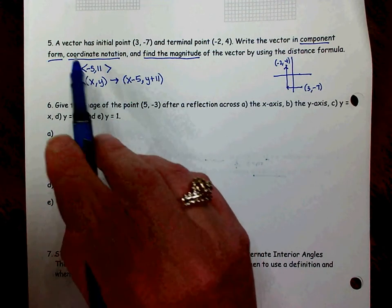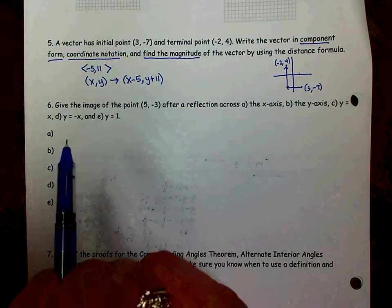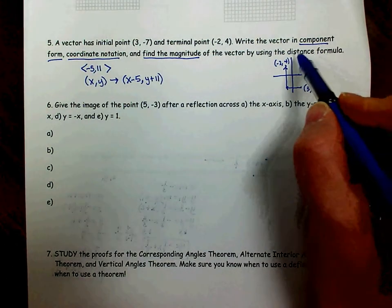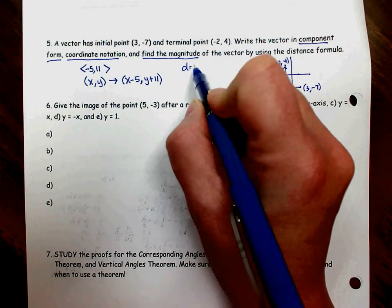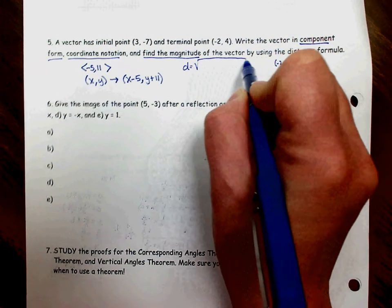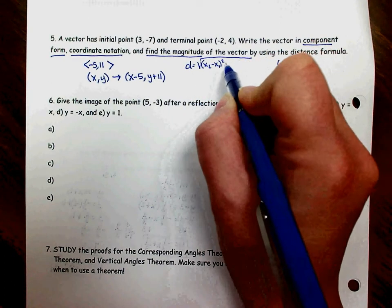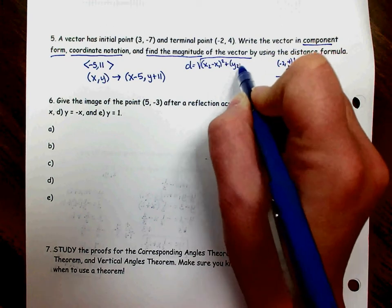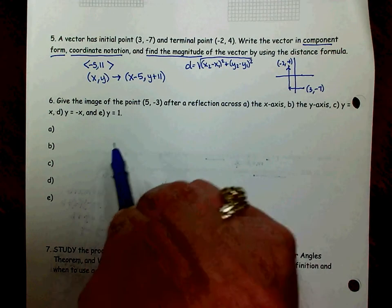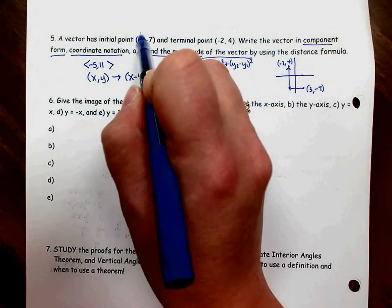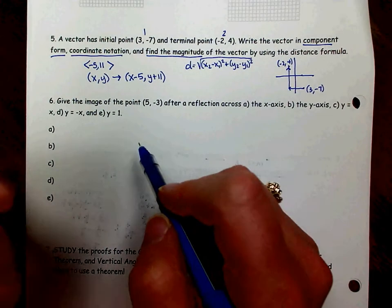We've done the component form, we've written it in coordinate notation, and now we need to find the magnitude. It specifically tells us to use the distance formula. So make sure you know the distance formula. Distance formula is your second x minus your first x squared plus the second y minus the first y squared and then you take the square root of that total. So if you will label your first and second point, that just helps ensure that you put those coordinates into the formula correctly.